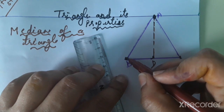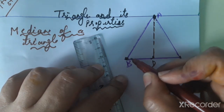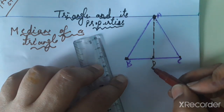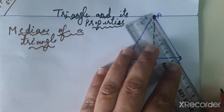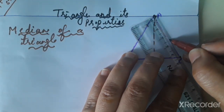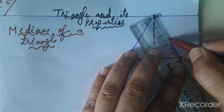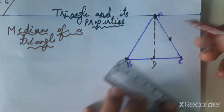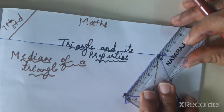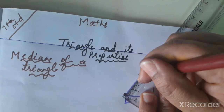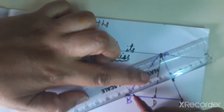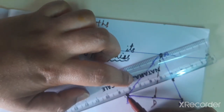So the median is the line segment joining a vertex to the midpoint of the opposite side. We can draw exactly three medians, one from each vertex. From vertex A, we draw median AD to point D, the midpoint. The midpoint is at 2.5 centimeters because this is an equilateral triangle, so all sides are equal.